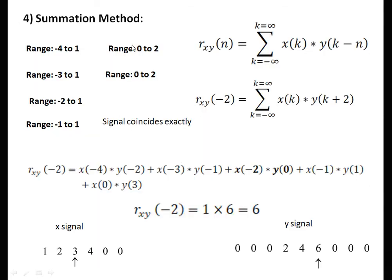Fourth method is the summation method. This method is somewhat difficult because from the graphical method you can get the range, and from that you can easily calculate. Only one term is solved here — don't follow this method in the exam as it is tedious and you need to know the range. For R_xy(minus 2), with k going from minus 4 to 1 and n = minus 2: only x(minus 2) into y(0) = 1 into 6 = 6 contributes; all other terms have at least one zero.